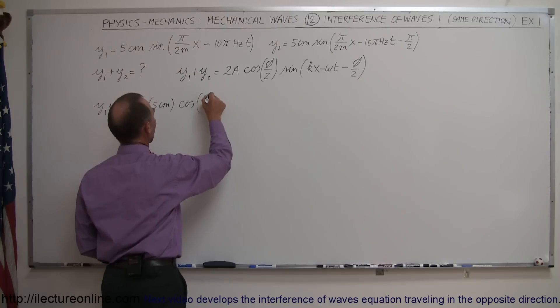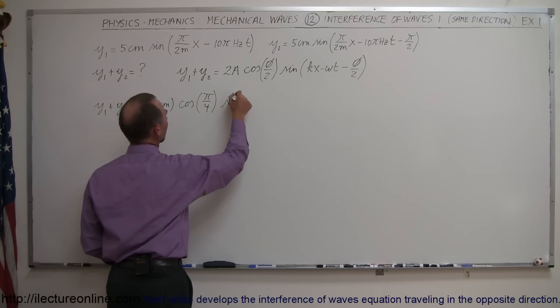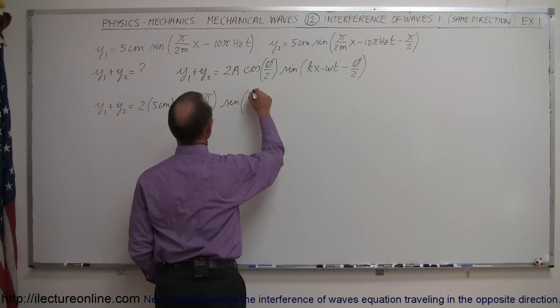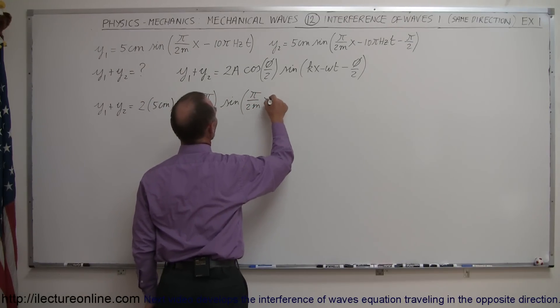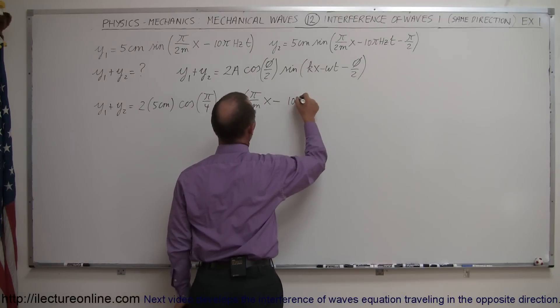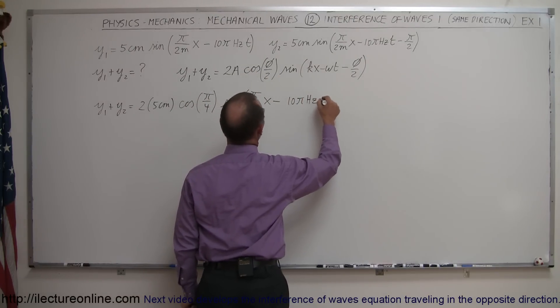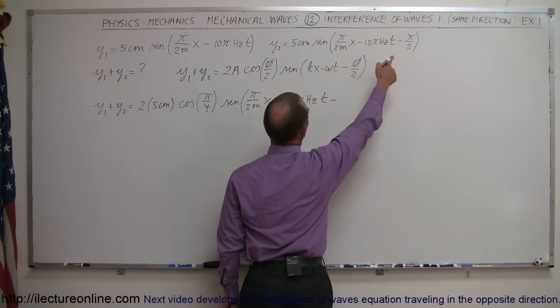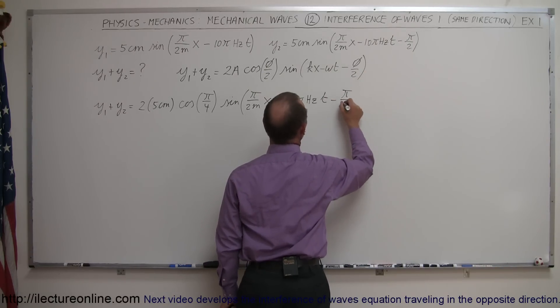So the cosine of pi over 4 times the sine of kx. So k was pi over 2 meters, so pi divided by 2 meters times x minus omega, in this case was 10 pi hertz, 10 pi hertz times t, and that would be minus phi over 2, that would be minus pi over 4.